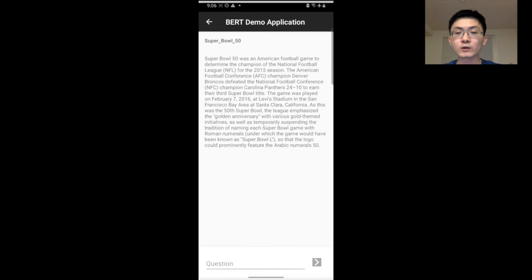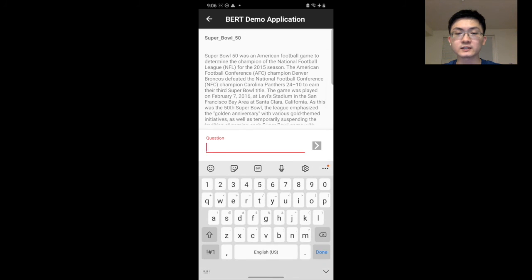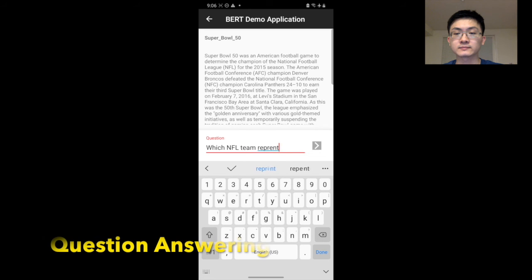We show our real-time BERT application in this video. There are two tasks. The first one is question-answering tasks. Type a random question that is related to the paragraph, and it will automatically highlight the answer in the text.